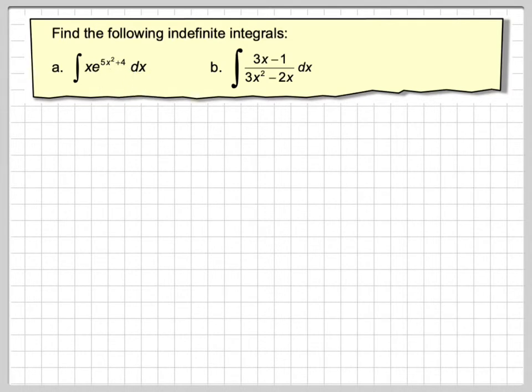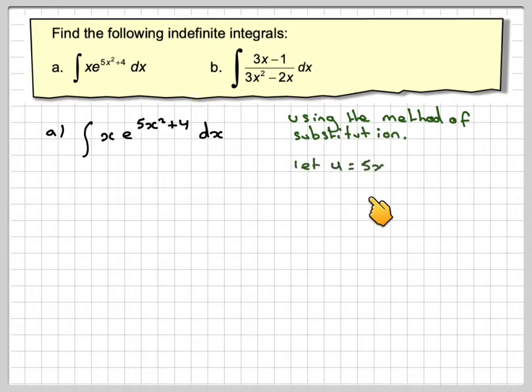Now you can do this directly, but we'll use the method of substitution. So if we let u be the power, u will be 5x squared plus 4. If we differentiate that,